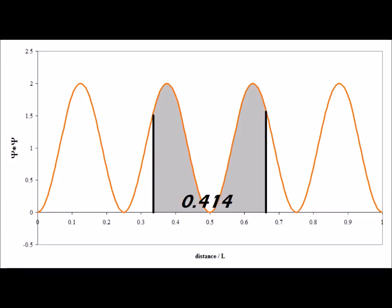Therefore, the probability of finding the particle in the middle third when it's in the n equals 4 state is about 41.4 percent.